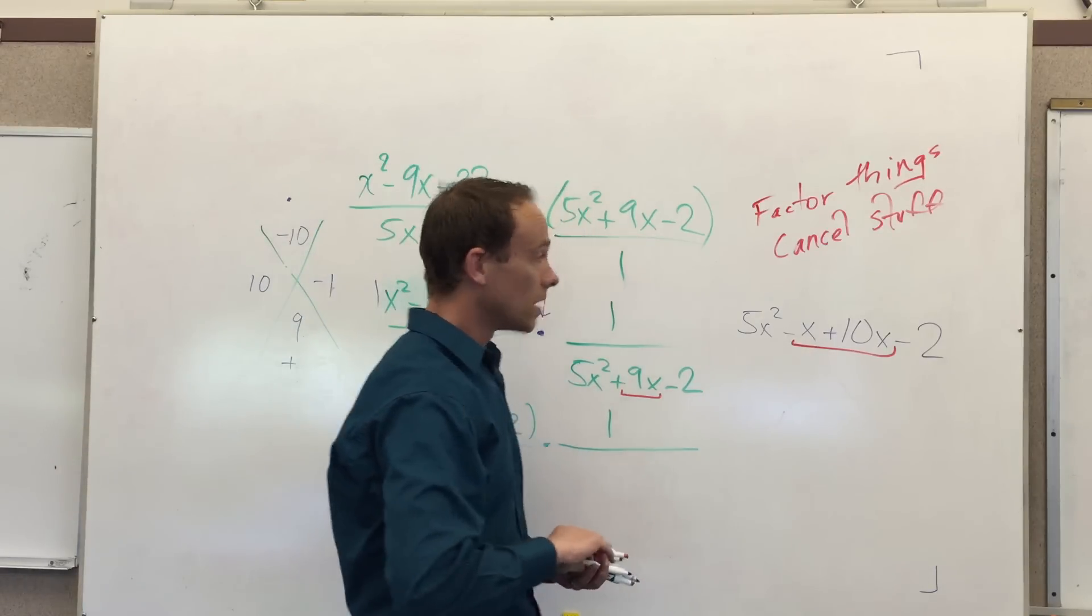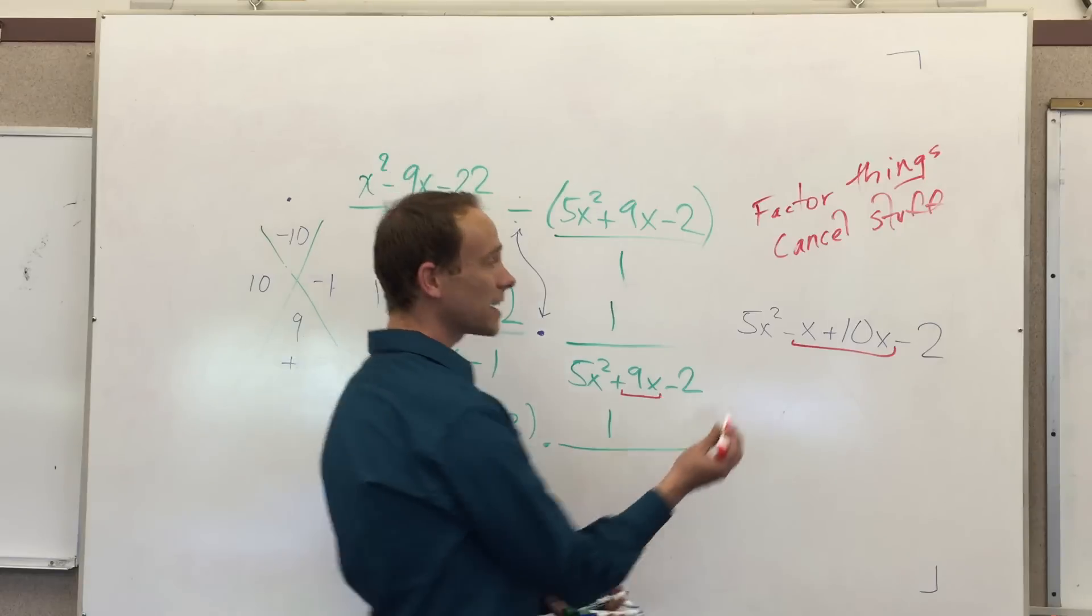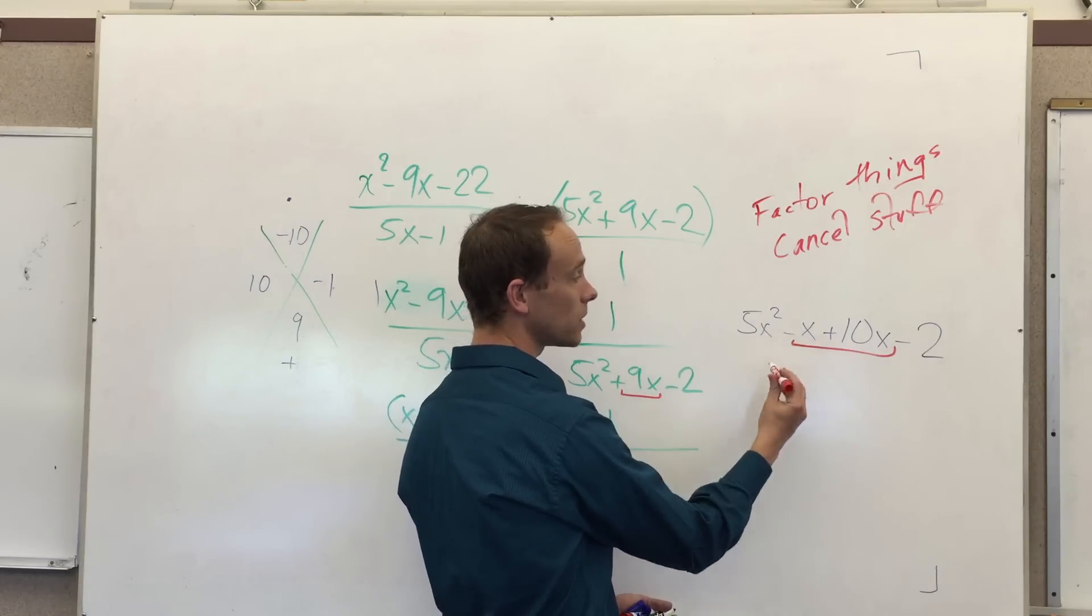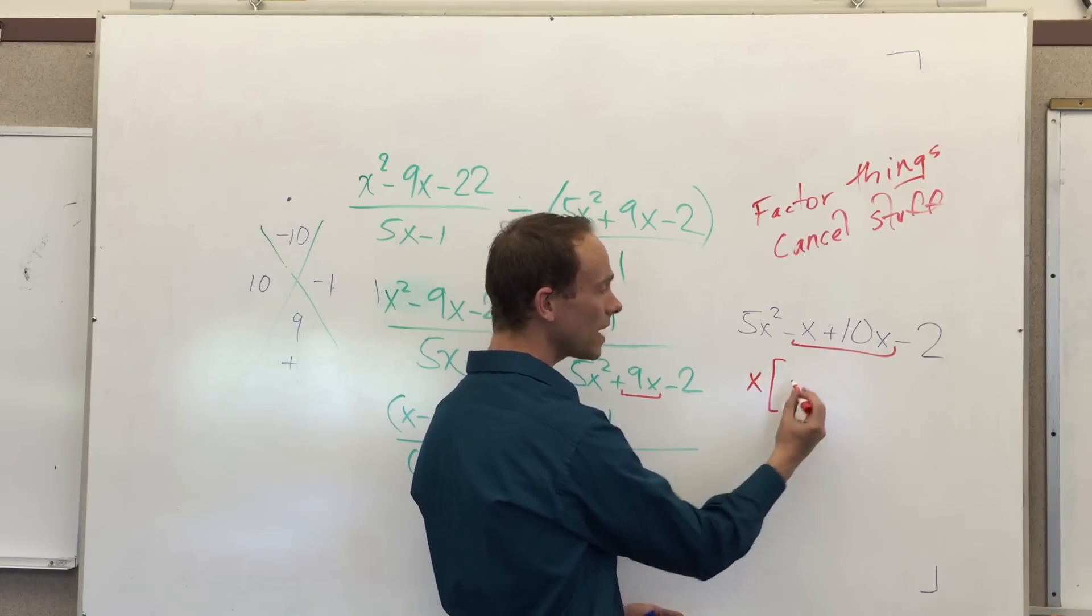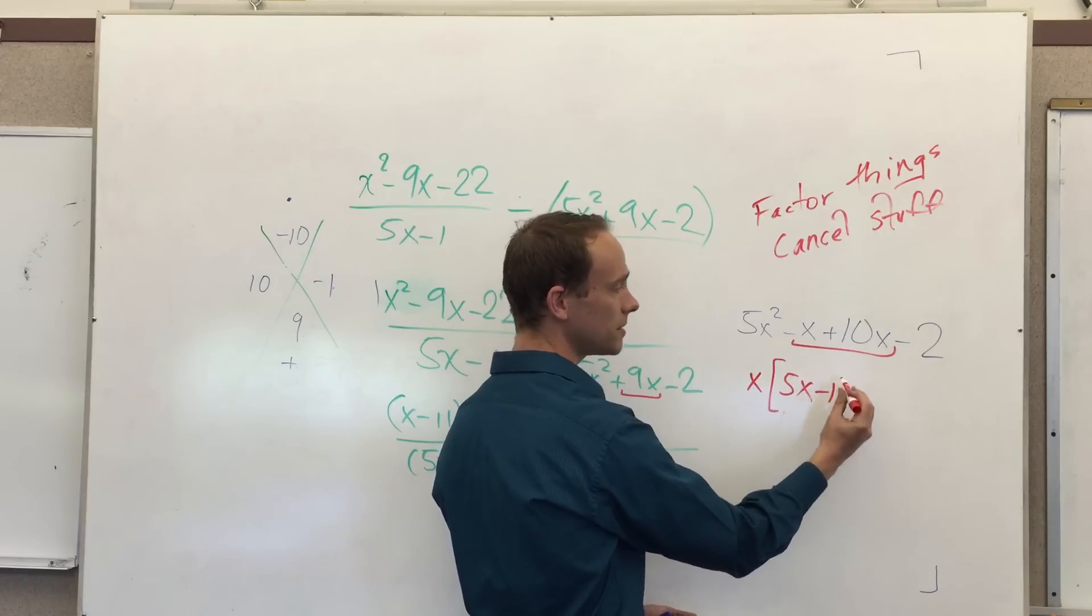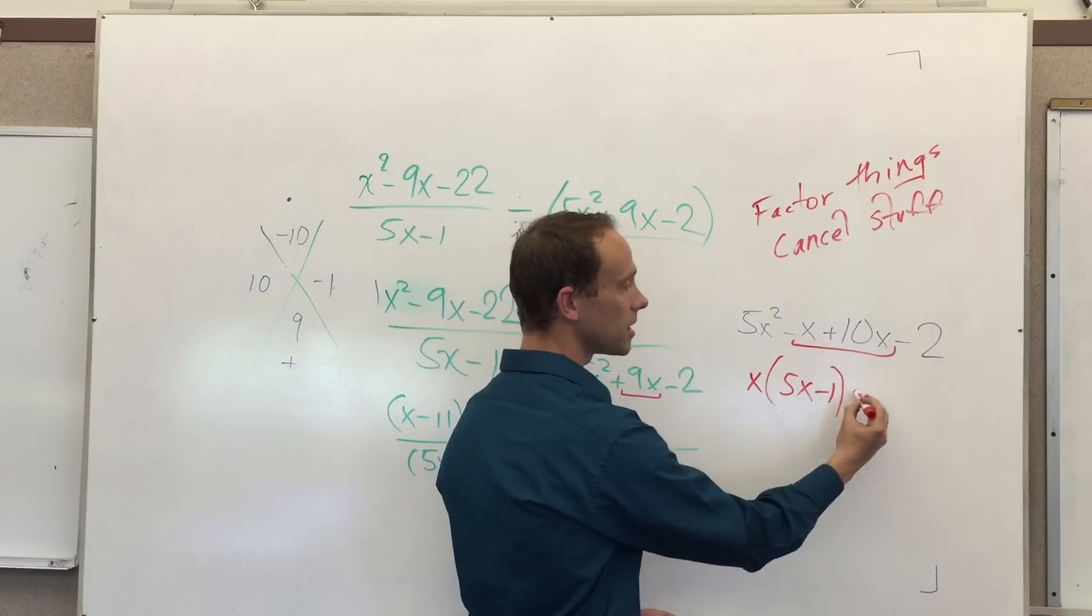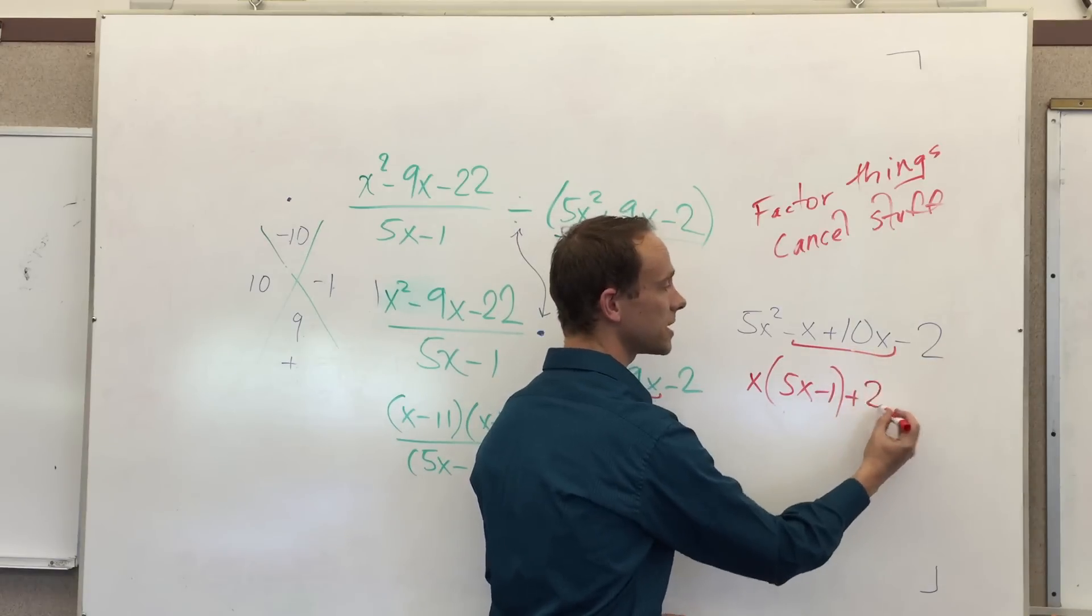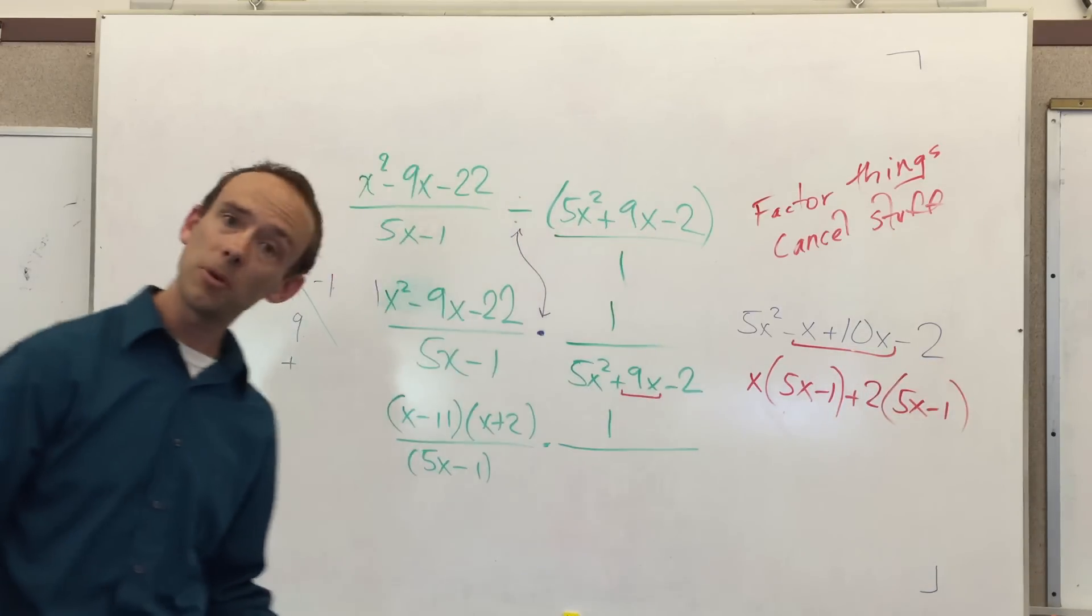But now we can't just assume the answer is here, because that leading coefficient wasn't 1. So here's what we do. We rewrite this bad boy. We go 5x squared. Instead of putting the 9x, we go minus x plus 10x minus 2. Notice I haven't really changed anything. I just split the middle term. It used to be a 9. Now it's negative 1 plus 10. I led with the negative because I like to do that. You don't have to. It doesn't matter at all. So what you do now is you factor the front and back terms by greatest common factor. So between 5x and 1x, I'm going to take out an x. And I'm left with 5x minus 1. Plus, between 10 and 2, I'm taking out a 2. And I'm left with 5x minus 1.